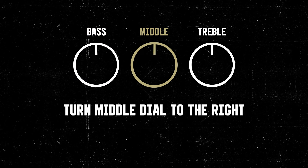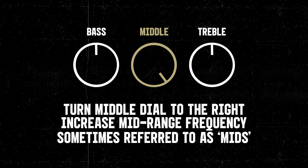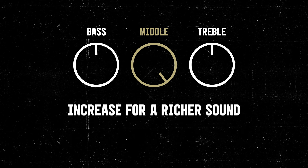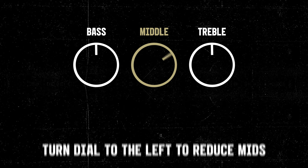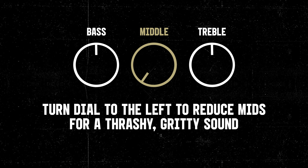When we turn the middle setting to the right we increase the mid-range frequencies, sometimes referred to as the mids. Increasing these gives you a richer sound. Turning the dial to the left we reduce the mid-range frequencies for a thrashy and gritty sound.